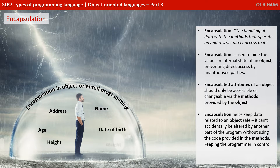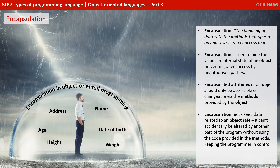Encapsulated attributes of an object should only be accessible or changeable via the methods provided by that object. Encapsulation therefore helps keep data related to an object safe. It can't accidentally be altered by another part of the program without using the code provided in the methods, thus keeping the programmer in control.